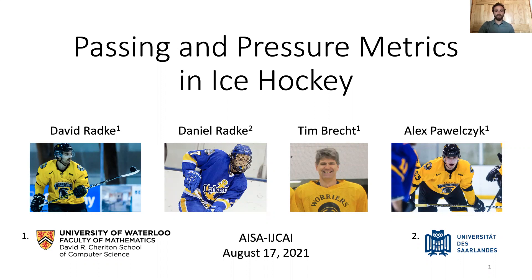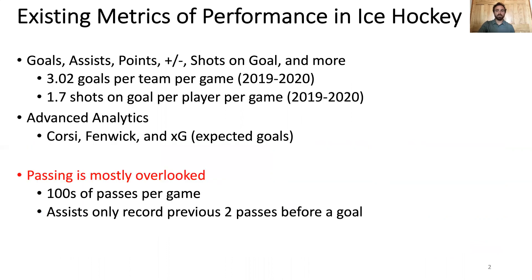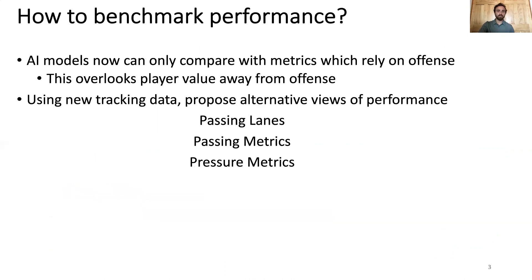I'll be talking about new metrics we designed for ice hockey, aimed at helping AI models in a sport which has really lagged others in analytics due to challenges with data collection. Existing metrics of performance in ice hockey mostly revolve around offense. However, these events are pretty sparse. So-called advanced analytics also rely on this offense to derive value. Despite hundreds of passes per game, the only metric for passing is assists, which only records the two passes preceding a goal. This leaves AI models to only learn and benchmark with offense, failing to capture a whole other view of the game.